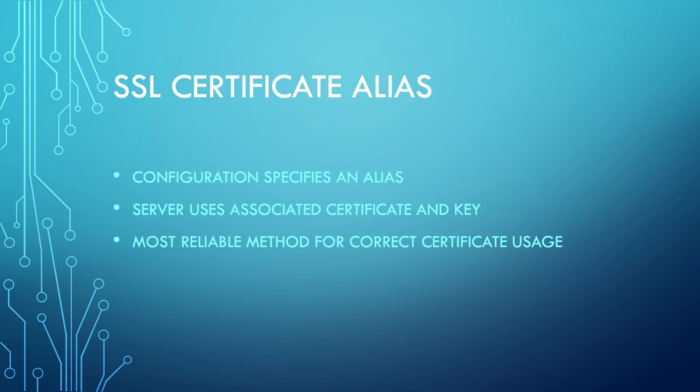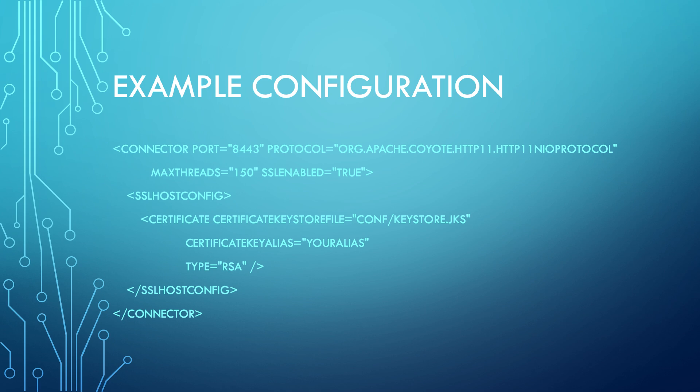Specified alias: if the server configuration specifies an alias, the server will use the certificate and key associated with that alias to secure HTTPS connections. This is the most reliable method to ensure the correct certificate is used.